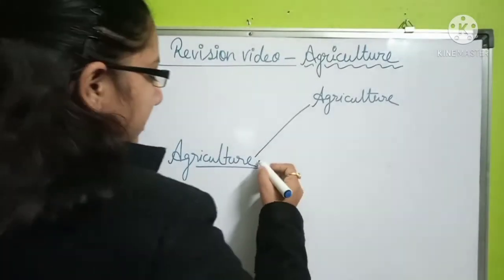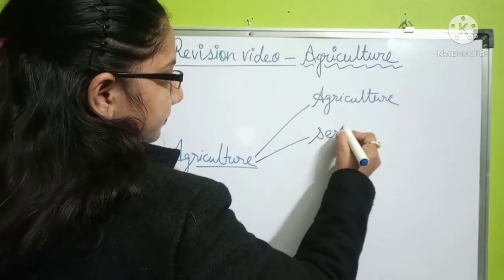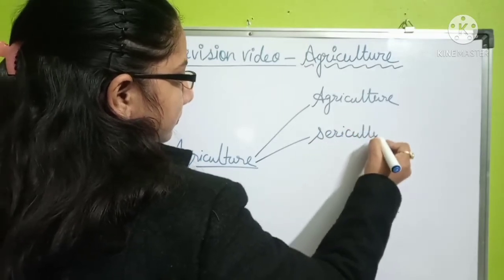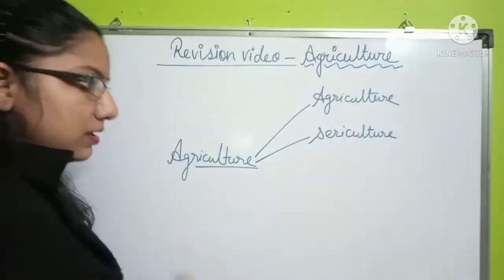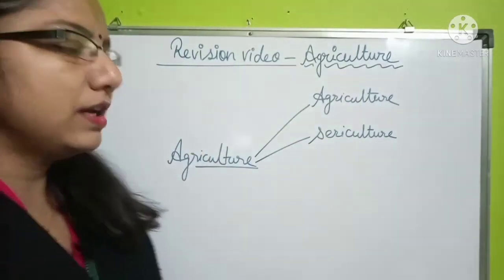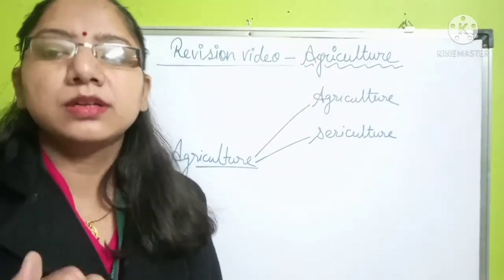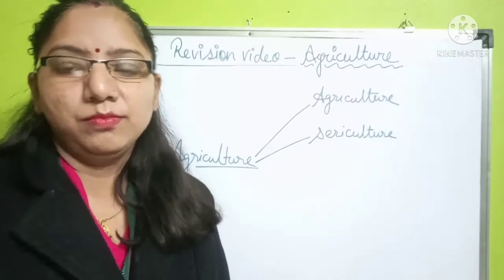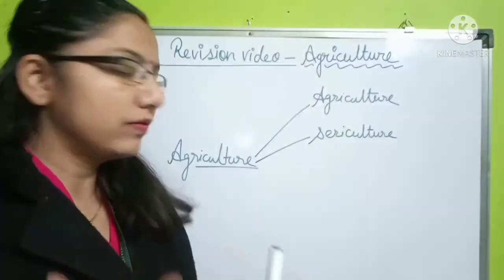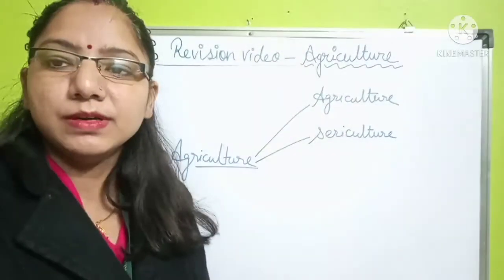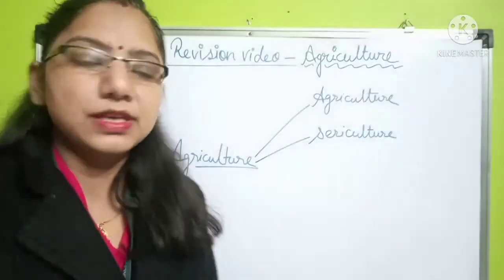The second is sericulture. Sericulture is related to silk cultivation — the cultivation of silk fiber is known as sericulture.